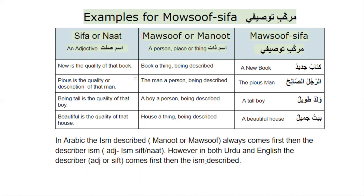Here are some examples of masuf sifa. In this column is the combination or the compound. This column is for the first word of the compound, which is masuf — usually a person, place, or thing. And this column is for the second one in the combination. Both are ism. This one is usually ism zaat and this one is ism sifth.